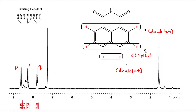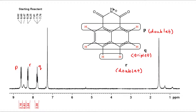Looking at the aromatic region of our proton NMR spectrum, we see signals appearing there — a good sign that we have 1,8-naphthalamide. The integration values for each of the three major signals are approximately two, denoting two protons per signal. The small signal corresponding to the proton on the nitrogen will be ignored, as we want to focus primarily on these aromatic protons.